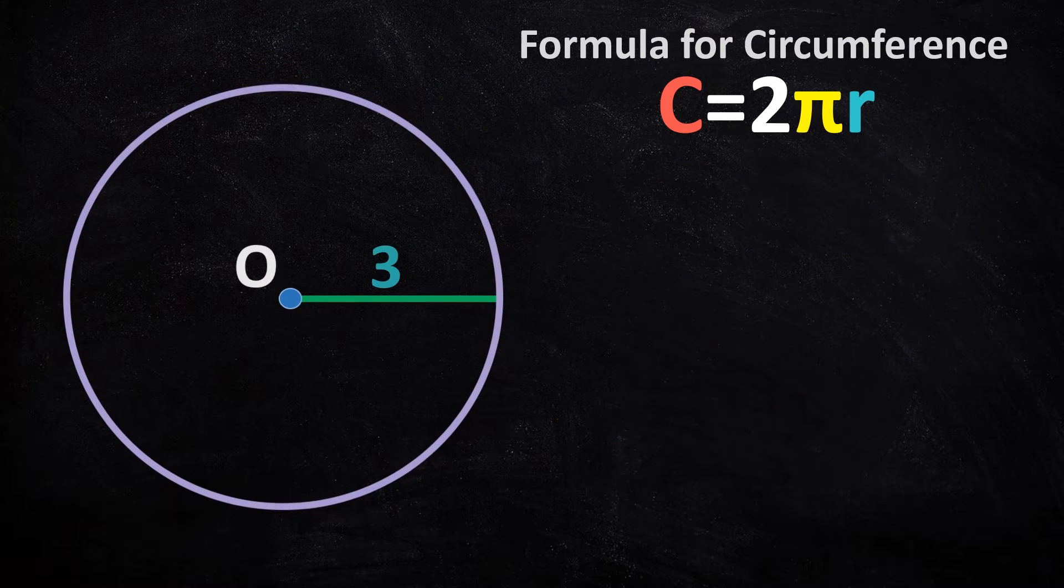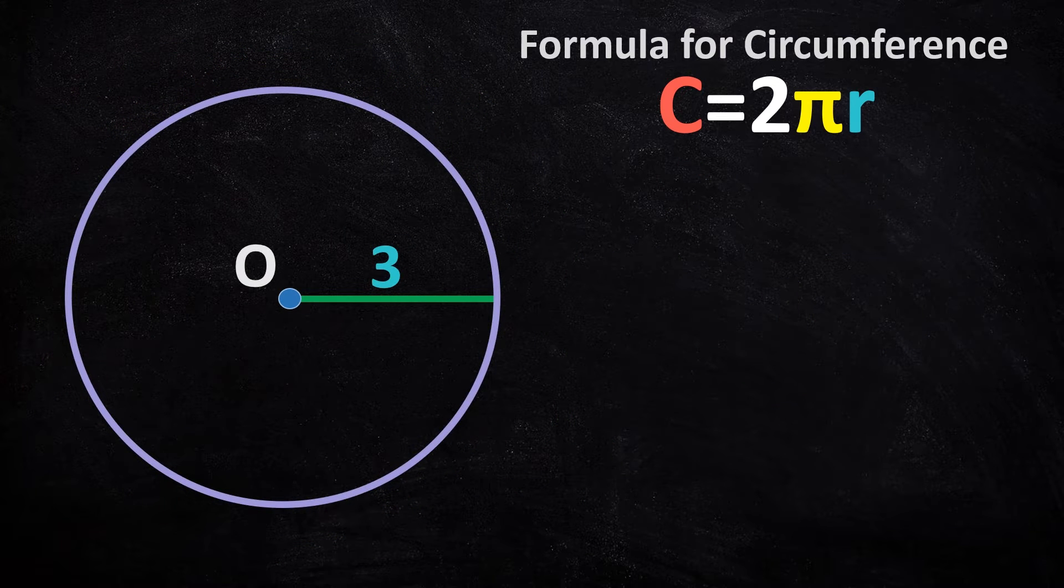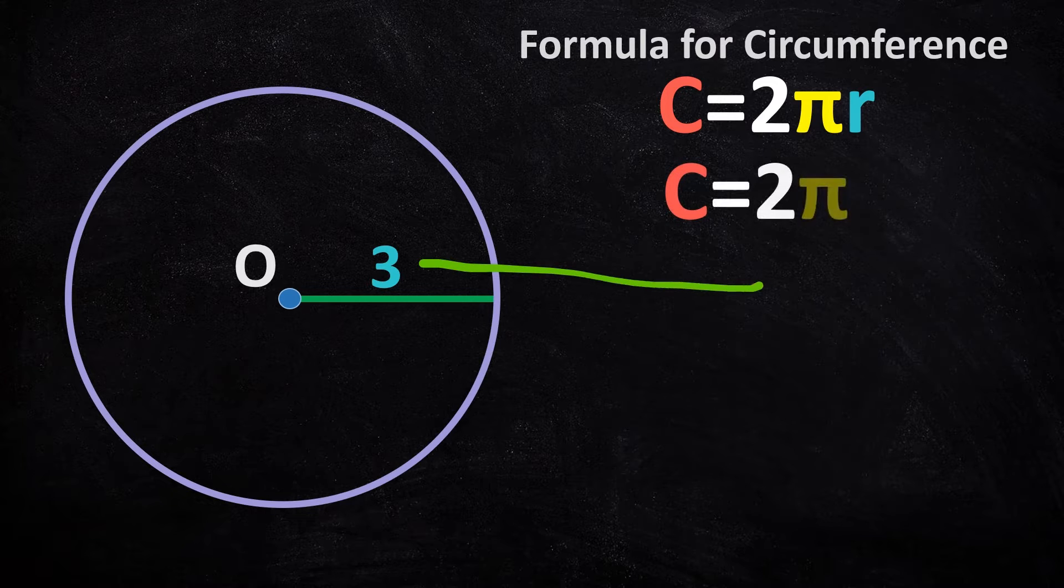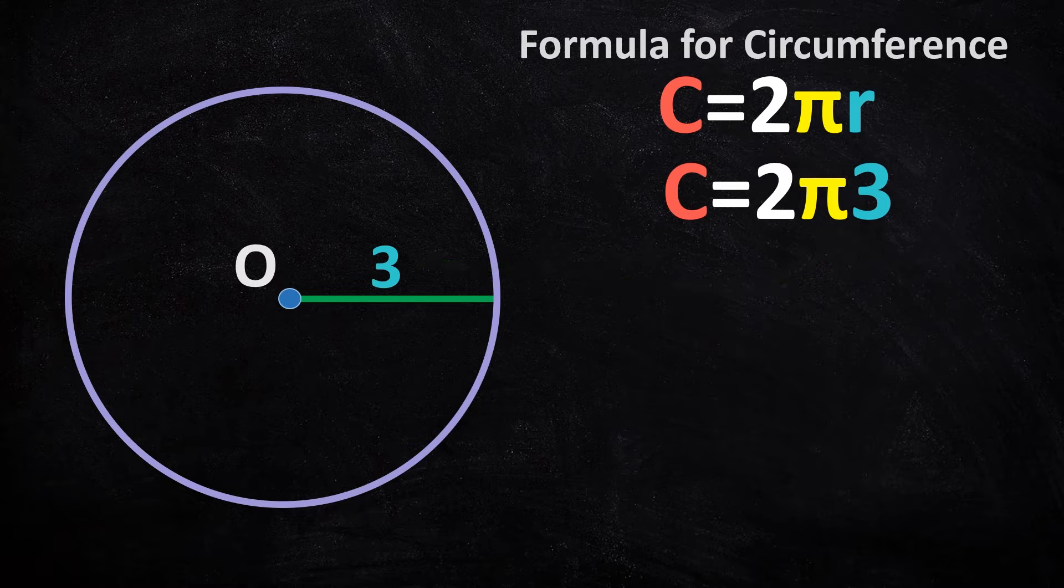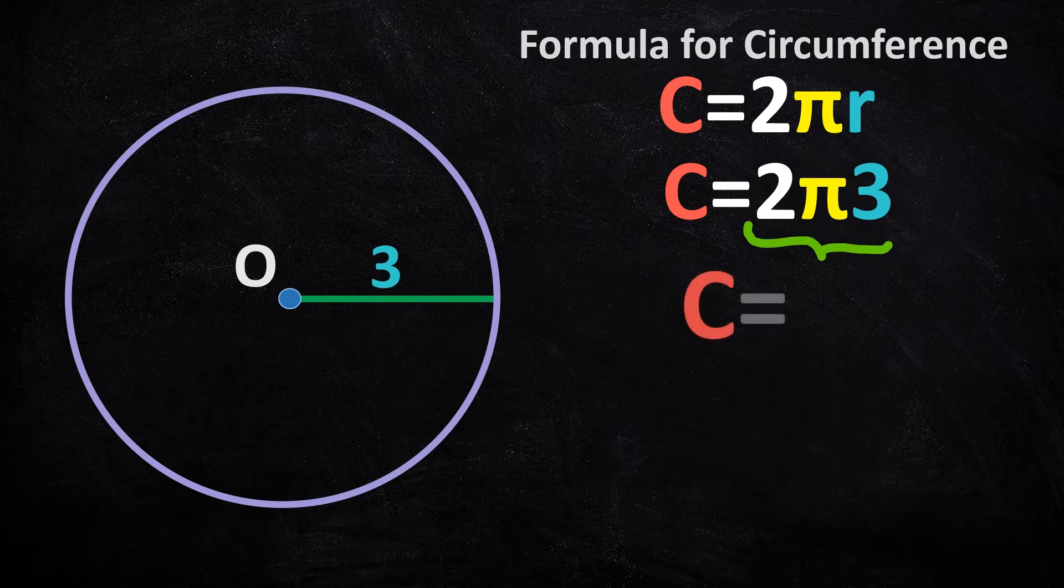Now let's do this one. The circle's radius is 3 and we want the circumference. Let's apply the formula. Its circumference equals 2 times pi times 3. 2 times 3 is 6. And voila! The circumference is 6 pi.